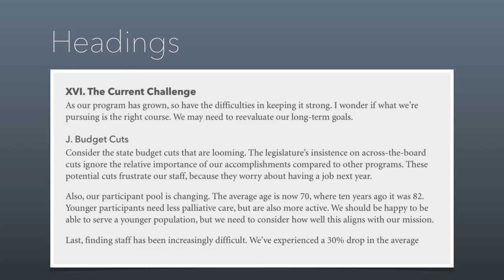The best convention is the simple 1.1.1 system, where the first number is the main level of headings, the second number is the first level of subheadings, and the third number would be sub-subheadings. The other nice thing about this convention is it's easy to find your way. If you refer somebody to Section 1.13, they can easily find it — it's a lot less confusing and easier for you to track as you put in those headings.